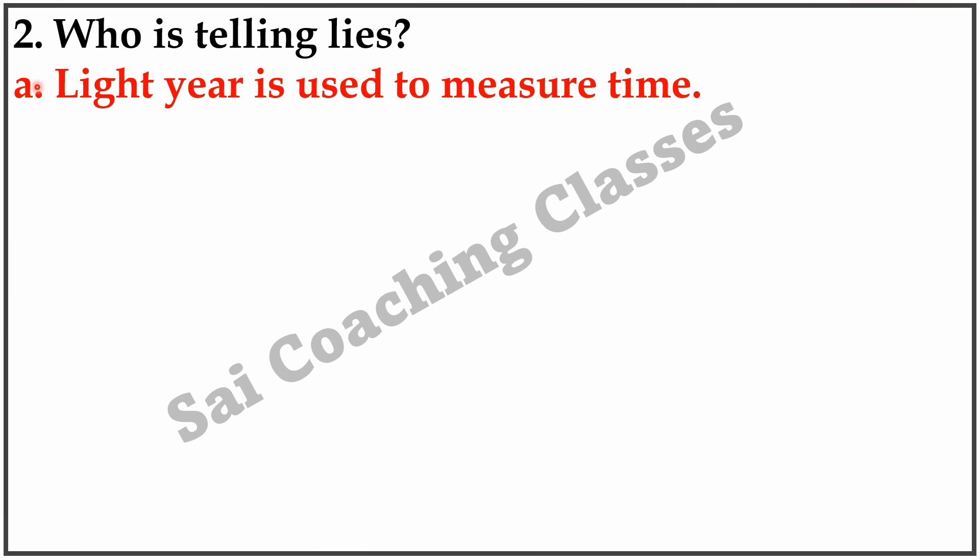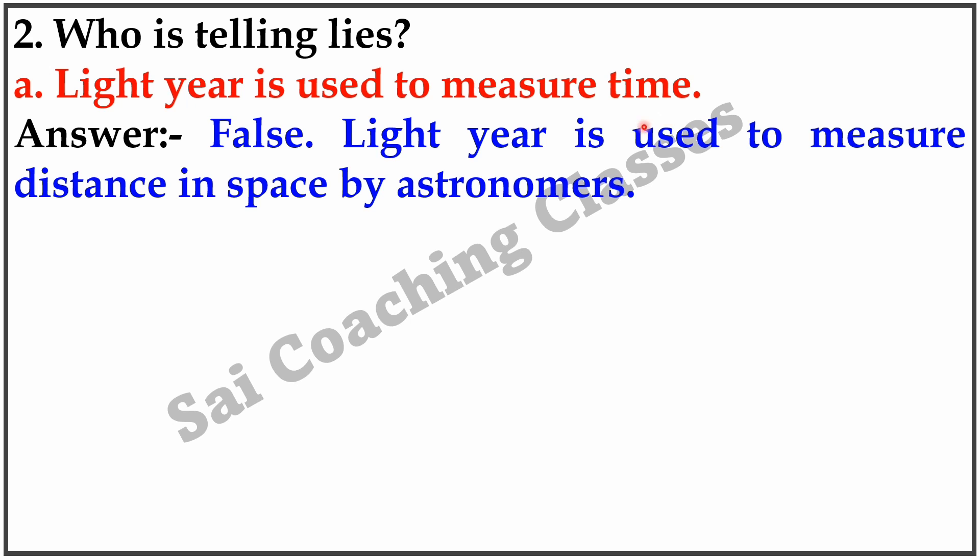Question 2. State whether the following are true or false. A. Light year is used to measure time. Answer: False. Light year is used to measure distance in space by astronomers.